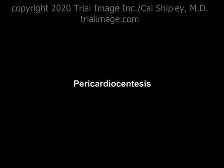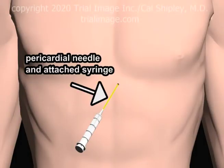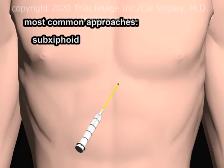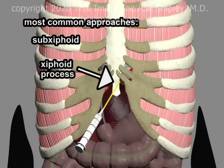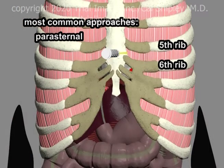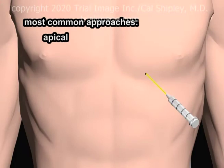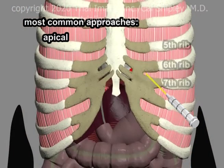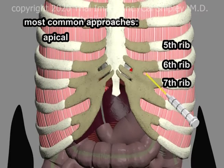Now that we have some understanding of the relevant anatomy and the concept of pericardial effusion and cardiac tamponade, let's take a look at pericardiocentesis. The first step involves using a needle to enter the pericardial space and the pericardial effusion that lies within. The three most commonly used approaches are: sub-xiphoid, as depicted here, where the needle is inserted just laterally to the xiphoid process of the sternum; parasternal, where the needle is inserted perpendicular to the patient's body just lateral to the left border of the sternum, usually above the fifth or sixth rib; and the apical approach, where the needle is inserted five to six centimeters lateral to the sternal border, usually in either the fifth, sixth, or seventh intercostal space.